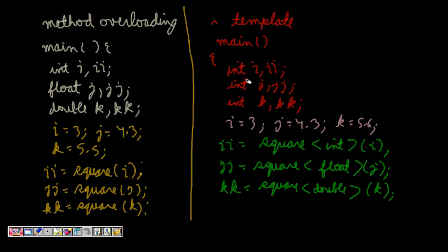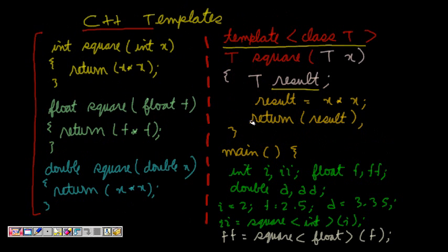Now if I have to code, I will have int i, int ii, float j, float jj, and I assign these. When I have to call these functions, I just call square and whatever type I'm giving, I write square<int>(i). This means now this function will take argument int and will return an int. This is the importance - I am just using one small piece of code.